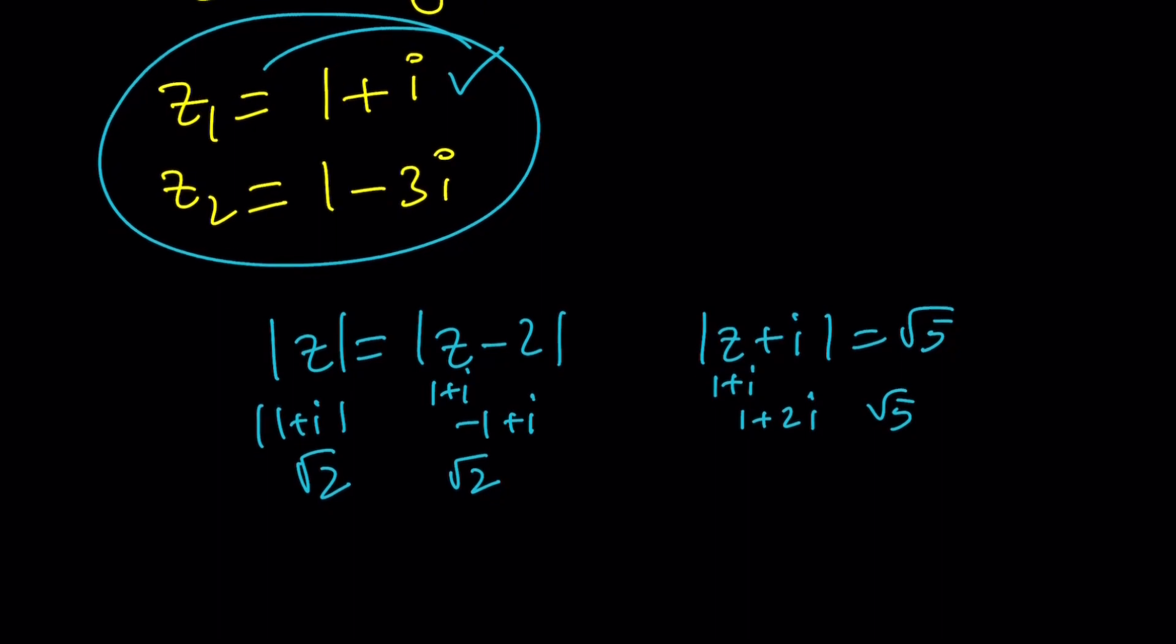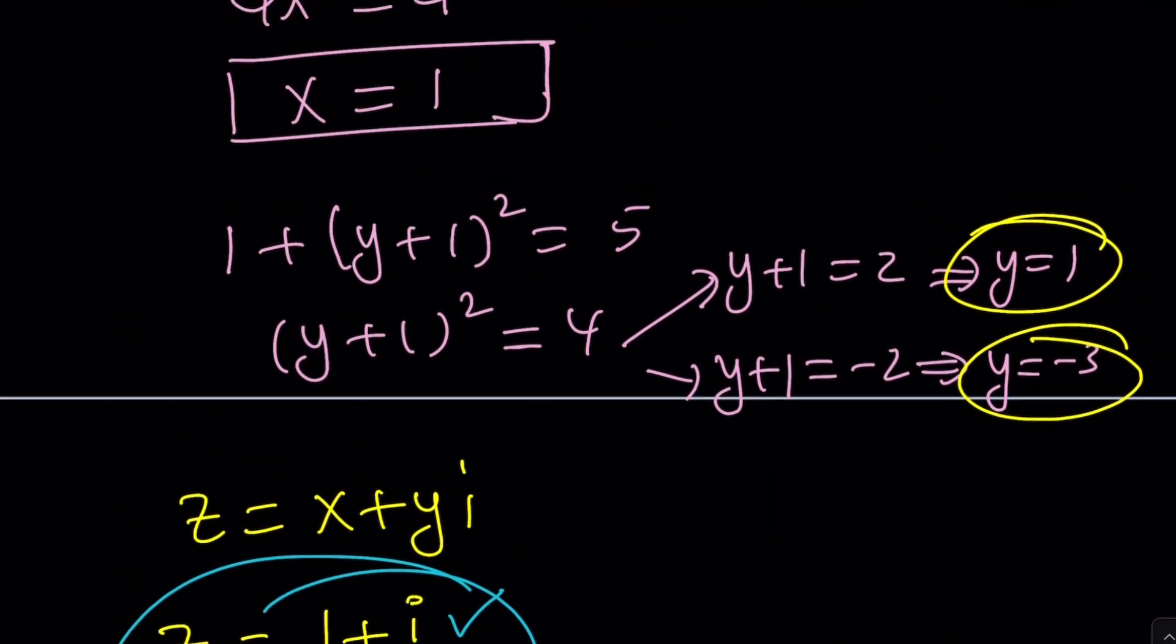How about the second one? 1 minus 3i. If you plug in, let's clean this area so we can start fresh. And now we have 1 minus 3i. If z is 1 minus 3i, its absolute value is just going to be square root of 10. If it's 1 minus 3i, subtract 2 from it, you're going to get negative 1 minus 3i. And its absolute value is again going to be square root of 10. Because as long as the numbers are 1 and 3 in absolute values, then you have the same thing. Second equation, 1 minus 3i plus i is going to give you 1 minus 2i, whose absolute value again is square root of 5. So that also passes the test. Passes the test with flying colors, we got 100%. So both of these solutions work, and we are basically good.